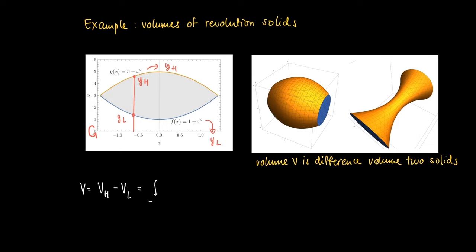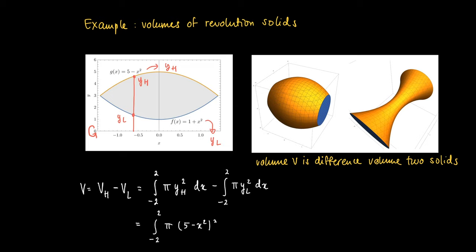We get a difference of two volumes. vh is calculated as the integral from minus 2 to 2 of pi times yh squared. The area function for the higher part equals pi times yh squared. We subtract the lower one: the integral from minus 2 to 2 of pi times yl squared. Substituting yh as (5 minus x squared) squared and yl as (1 plus x squared) squared gives us the two integrals.